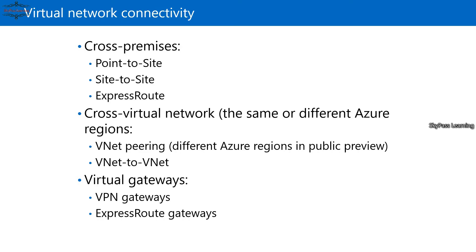Point-to-site gives you the opportunity to connect from anywhere. You just download a small application on your machine, or configure the VPN on Windows 10 or any other machine, and you can connect directly. I will show how to do that in an upcoming video.